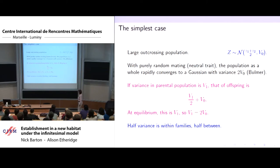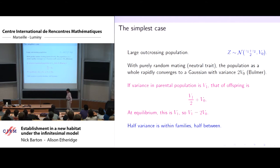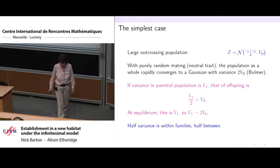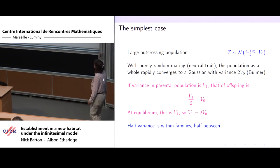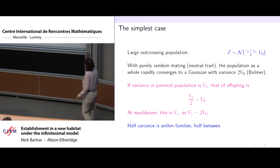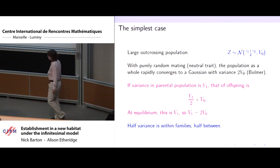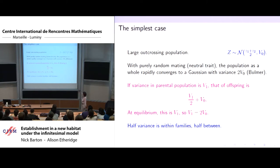Here's a simple case worked out by Bulmer. Suppose we've got a large outcrossing population mating randomly — some neutral traits, individuals just choosing two parents uniformly at random. Then very rapidly, the distribution of traits across the whole population will evolve to a Gaussian. In this outcrossing population, the variance across the whole population will just be twice V0. If the variance in the parental population is V1, sampling two individuals gives variance (1/2)V1, plus V0 from reproduction. At stationarity, V1 = V1/2 + V0, giving V1 = 2V0.